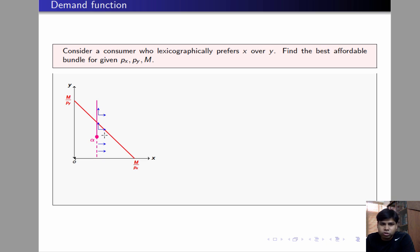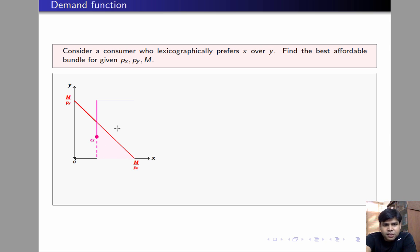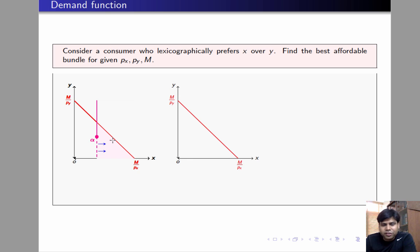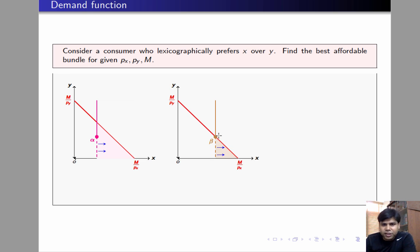Bundles lying to the right of alpha are also strictly preferred to alpha because of criterion 1. So there exist affordable points strictly preferred to alpha, meaning alpha cannot be the best affordable bundle. Now consider a point on the budget line such as beta. The shaded region contains bundles that are both affordable and better than beta, so moving in that direction improves satisfaction. This reasoning holds for any point on the budget line except the point where the consumer spends all his money on x.